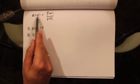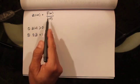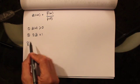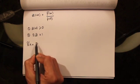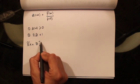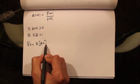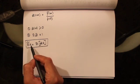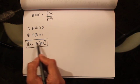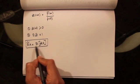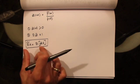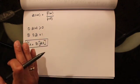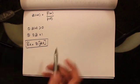If we define the Radon-Nikodym derivative like this, then we can calculate the expectation of a random variable X under the risk-neutral measure. This is given by the expected value under the actual probability measure of Z times X. This was the relationship between the expected value of a random variable X under the risk-neutral measure versus the expected value under the actual probability measure.